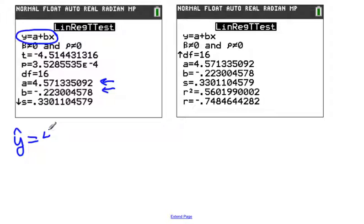a is 4.571. b is negative 0.223, so we'd have negative 0.223x. This is actually the equation, this relates your x explanatory variable to your y-hat, your predictor variable. Y-hat represents that this is from a sample data, and a different sample will create a different equation.